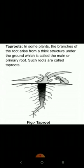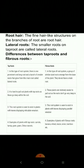In some plants, the branches of the root arise from a thick structure under the ground, which is called the main or primary root. Such roots are called tap roots. The following figure shows the structure of tap roots.